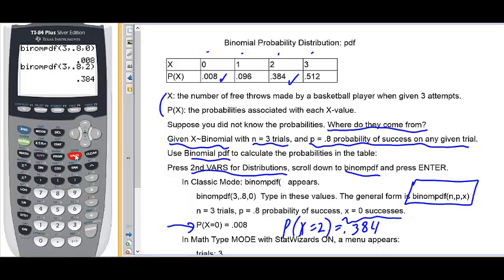Let's go back to second distributions one more time. Down to binomial probability. Binomial pdf. And let's only enter the three, comma, point eight. Let's close the parenthesis early and not specify a particular x value. Hit enter. And you'll notice it gives all the probabilities of each x value.